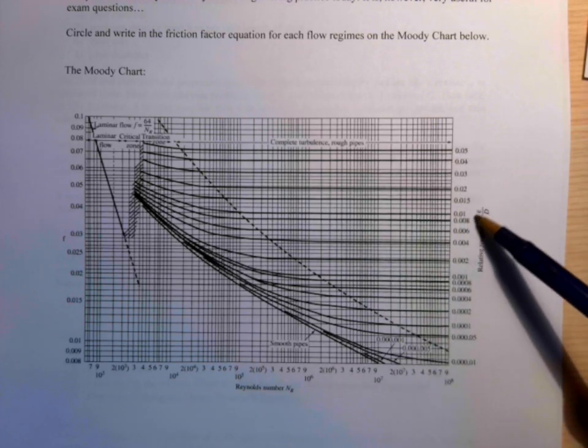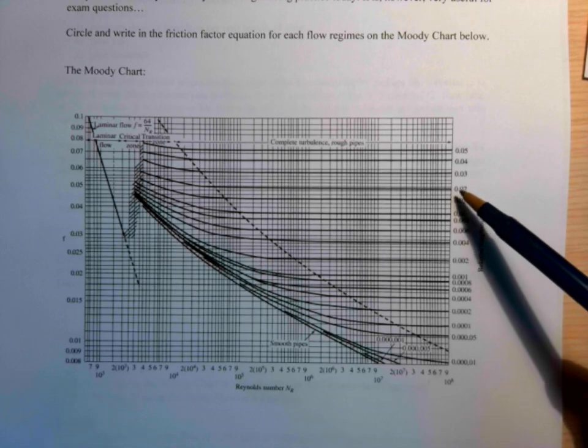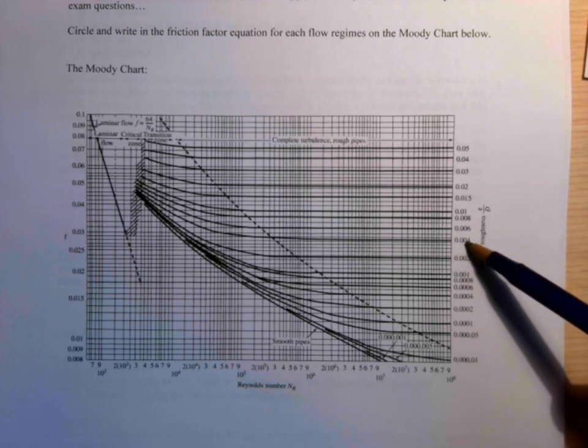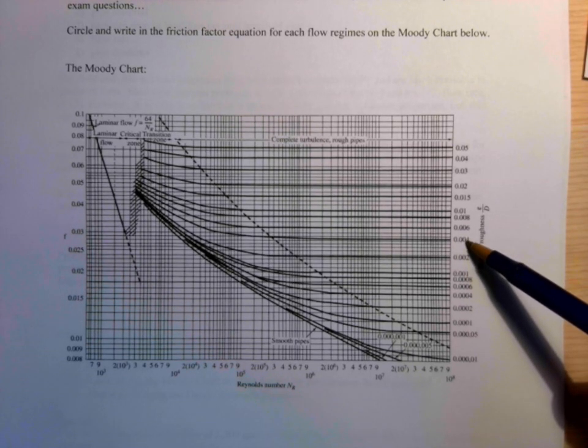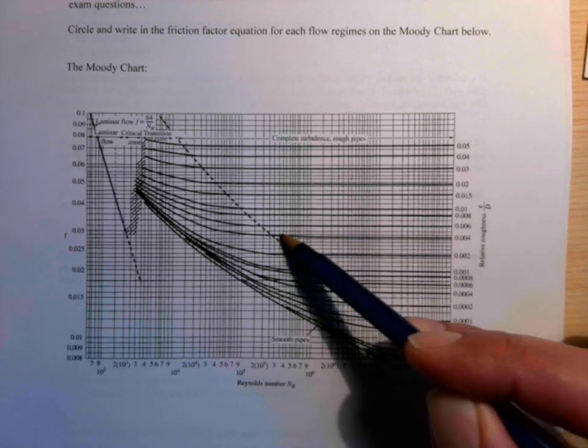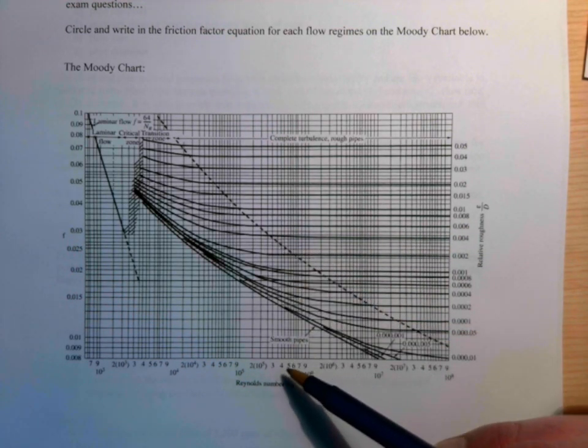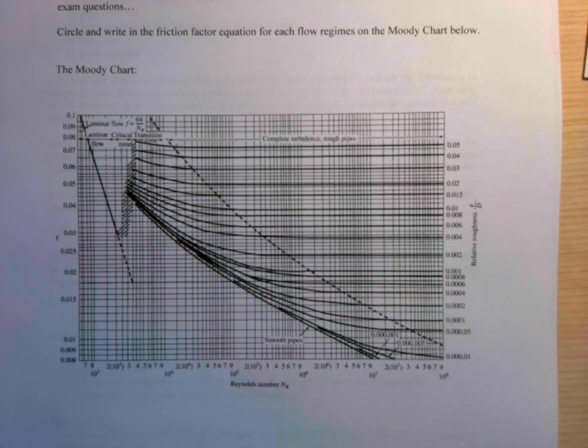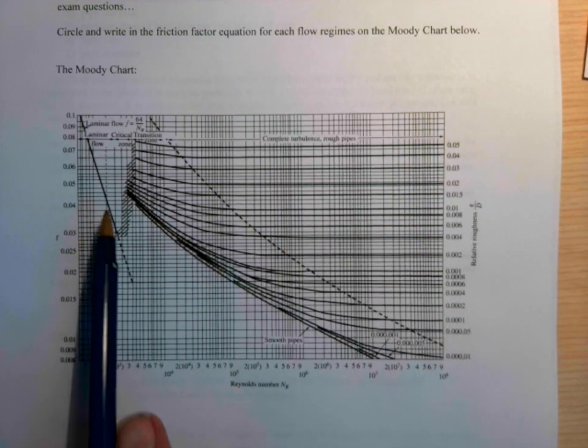We find the relative roughness, one-dimensional number here, one of these dark lines. We may have to draw one in if we're in between, like between these two would be 0.05. Then we follow that over to where we're at the Reynolds number here on the x-axis, and then we read the friction factor from the left side. So that's how we use this.